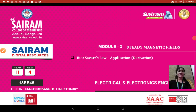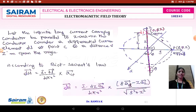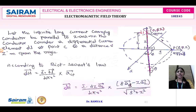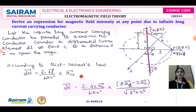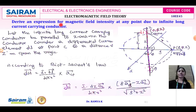Good morning students. In today's session we are going to see the application of Biot-Savart's law — we will solve some derivations to identify the value of magnetic field intensity. Here we will consider the problem: derive an expression for magnetic field intensity at any point due to an infinite long current-carrying conductor.